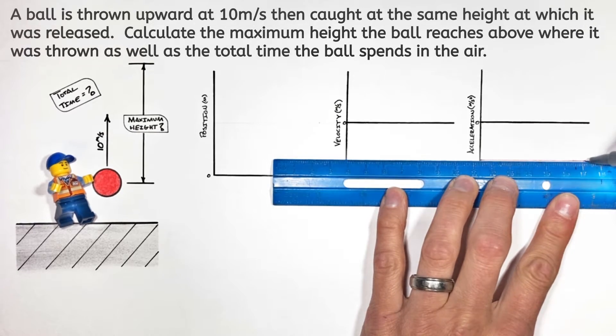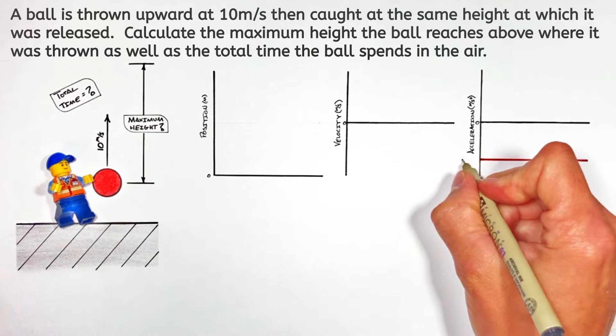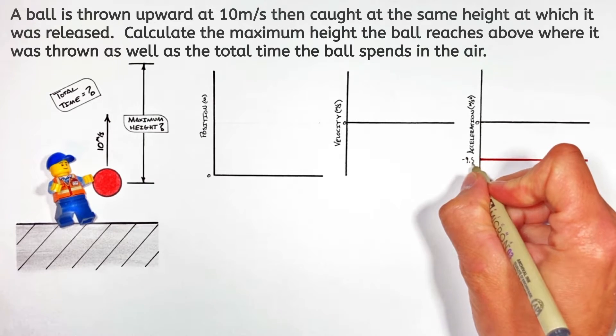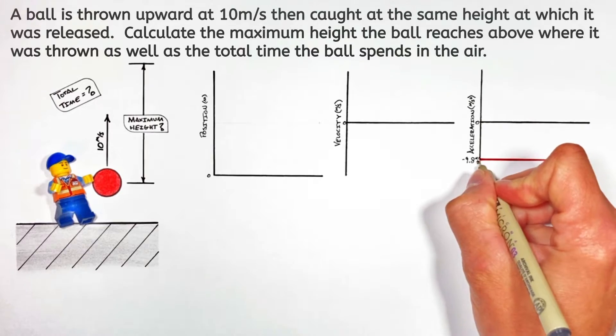From the moment this ball is thrown until the moment it's caught, the ball is in free fall, even on the way up. Anytime an object is in free fall, it's going to be accelerating downward at 9.8 meters per second squared.